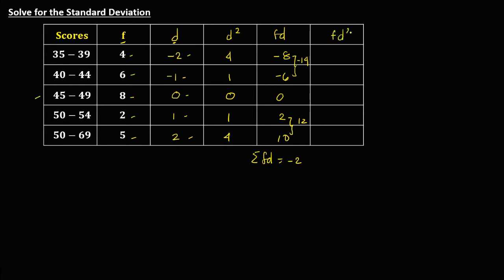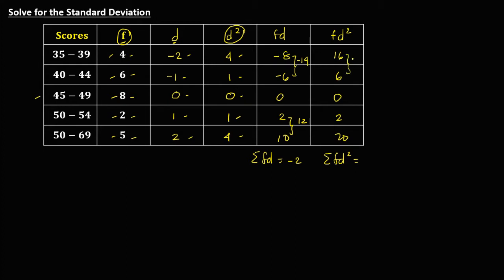For the last column, find the product of F and D squared. So 4 times 4 is 16, 6 times 1 is 6, 8 times 0 is 0, 2 times 1 is 2, and 5 times 4 is 20. The summation of FD squared: 16 plus 6 is 22, and 2 plus 20 is also 22. So 22 plus 22 gives ΣFD² = 44.